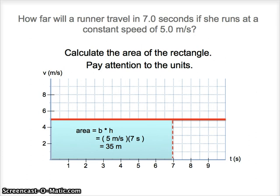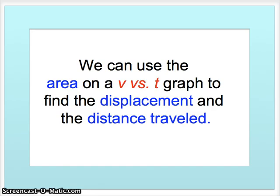So this will allow us to handle much more complex situations where the speed either changes in sudden bursts or if it has a gradual acceleration. The key idea is that the area on a velocity versus time graph can tell us the displacement and also the distance traveled. We'll see in a few minutes the difference between those two things.